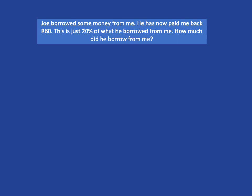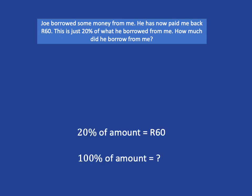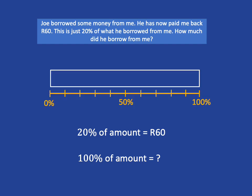Let's summarize the story. We're being told that 20% of the amount Joe borrowed is 60 rand, and we want to know the total amount — that is, 100% of the amount he borrowed from me. So this is going in the other direction: we know 20% and we want to get to 100%.